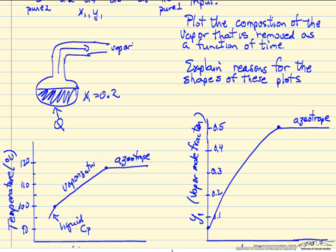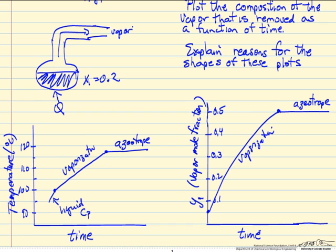And then at the azeotrope, the liquid and the vapor have the same composition. We're at constant temperature and we're not changing the mole fraction. So this is the vaporization, just like on the previous graph. I haven't made the timescales exactly the same, but the behavior is this vaporization occurs from here to here, and then the azeotrope occurs here.